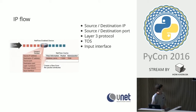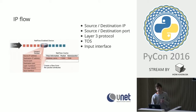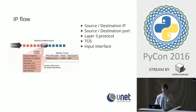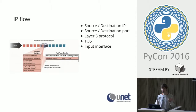IP flow or NetFlow is the source of data for our detection system. An IP flow is basically a set of packets transmitted through your network, identified by the five-tuple: source and destination IP address, source and destination port, and a layer three protocol. It may also include type of service and input interface depending on the exporter.